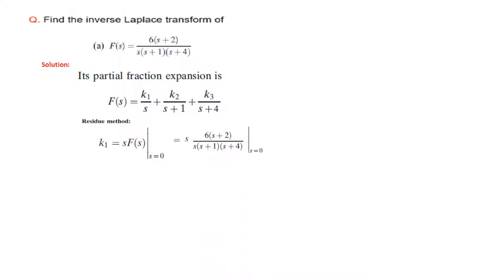Now let us plug in the value of f(s). We have plugged in the value of f(s) and now we can cancel s and s. This is the simplified form after cancellation, and now we plug in the value of s equal to 0 at these three places. It will be 6 into 2 which is 12, and 4 into 1 which is 4, so the answer is 3. So k1 is equal to 3.